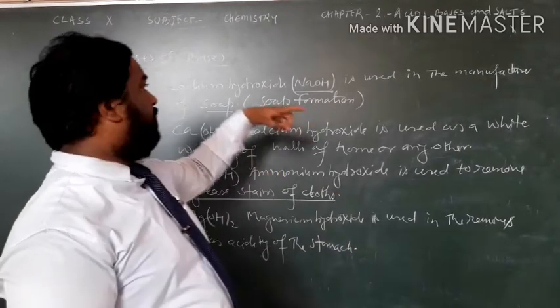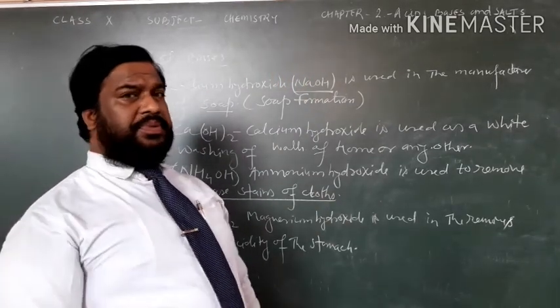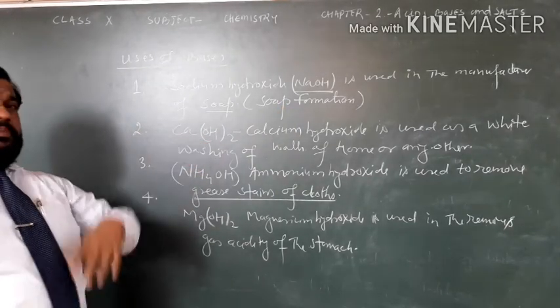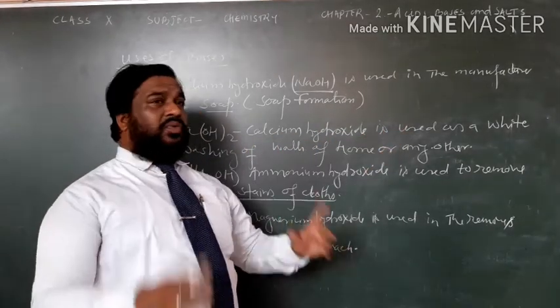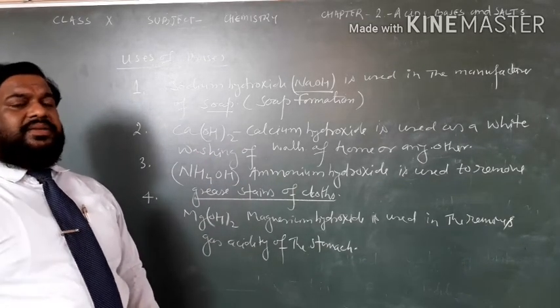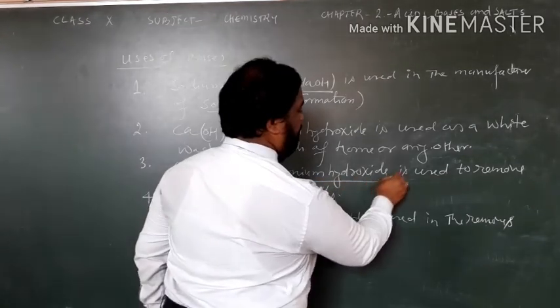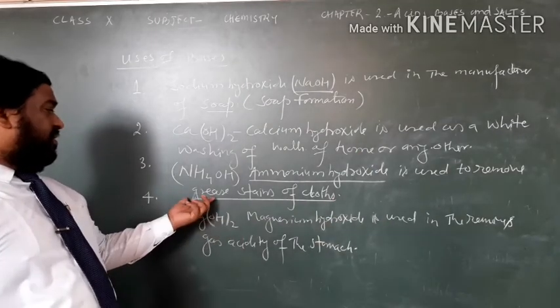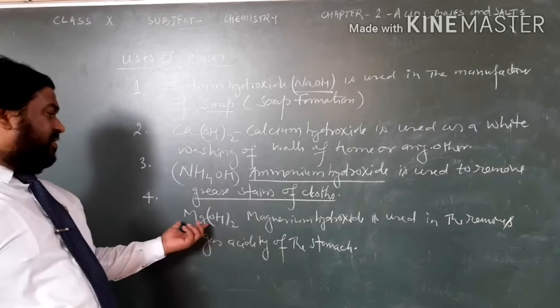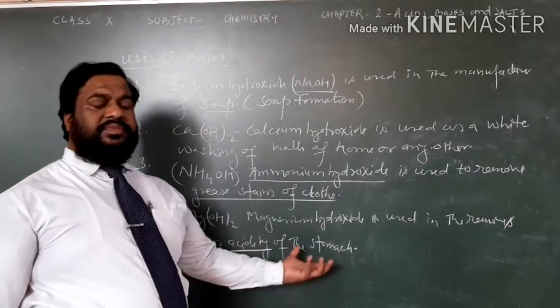In brief, Sodium Hydroxide is used in the manufacturing of soap. Calcium Hydroxide, a type of base, is used as whitewash for walls of rooms, factories or any other. Ammonium Hydroxide is used to remove grease stains on clothes. And last is Magnesium Hydroxide, used for acidity of the stomach.